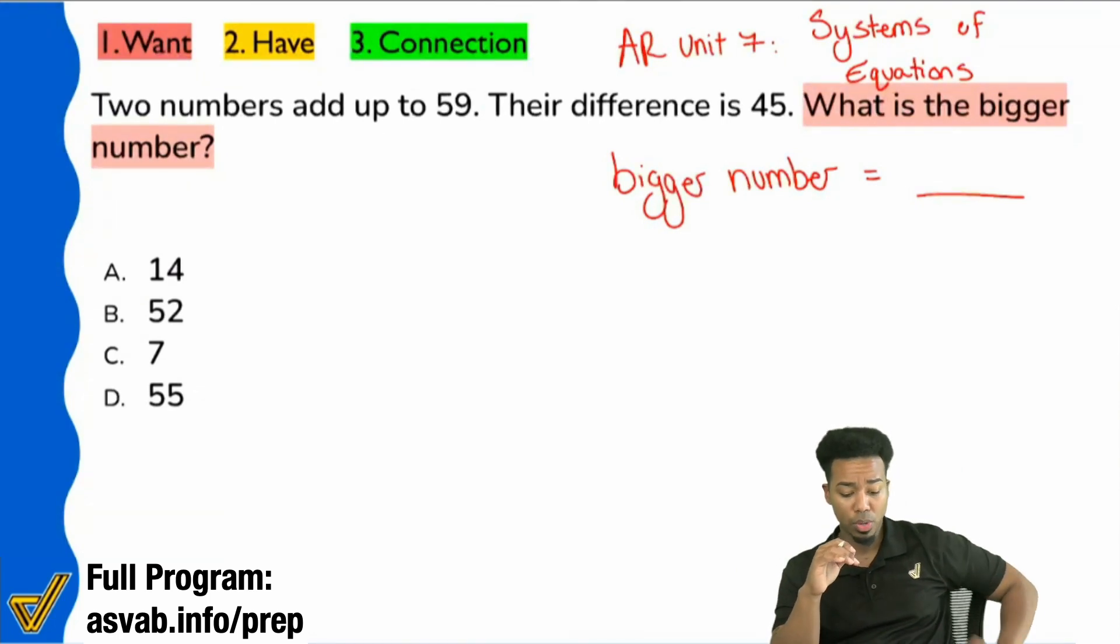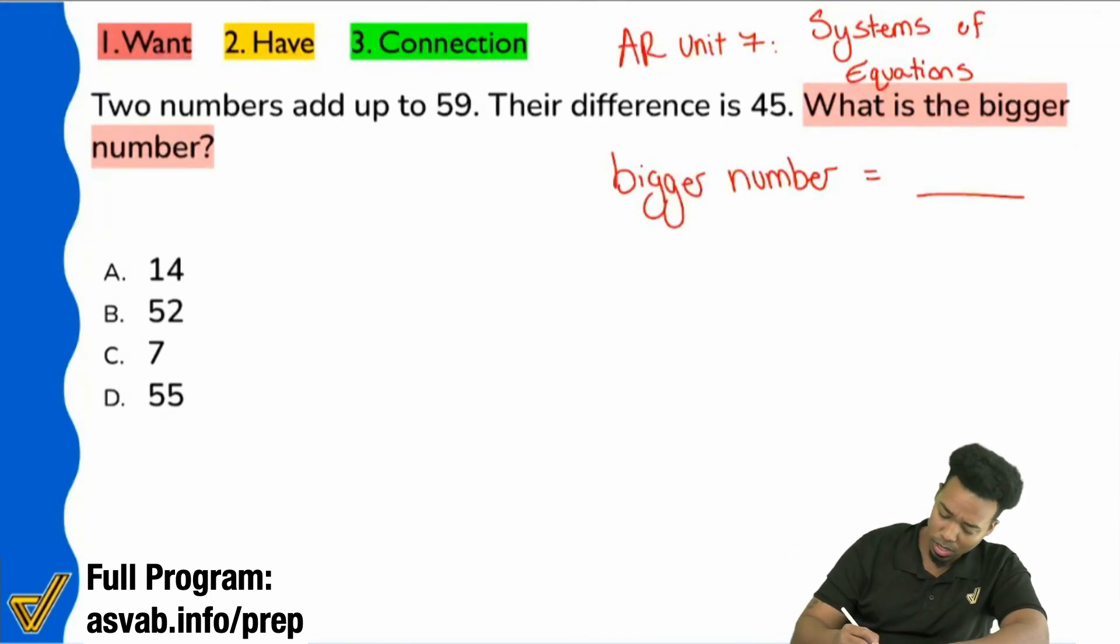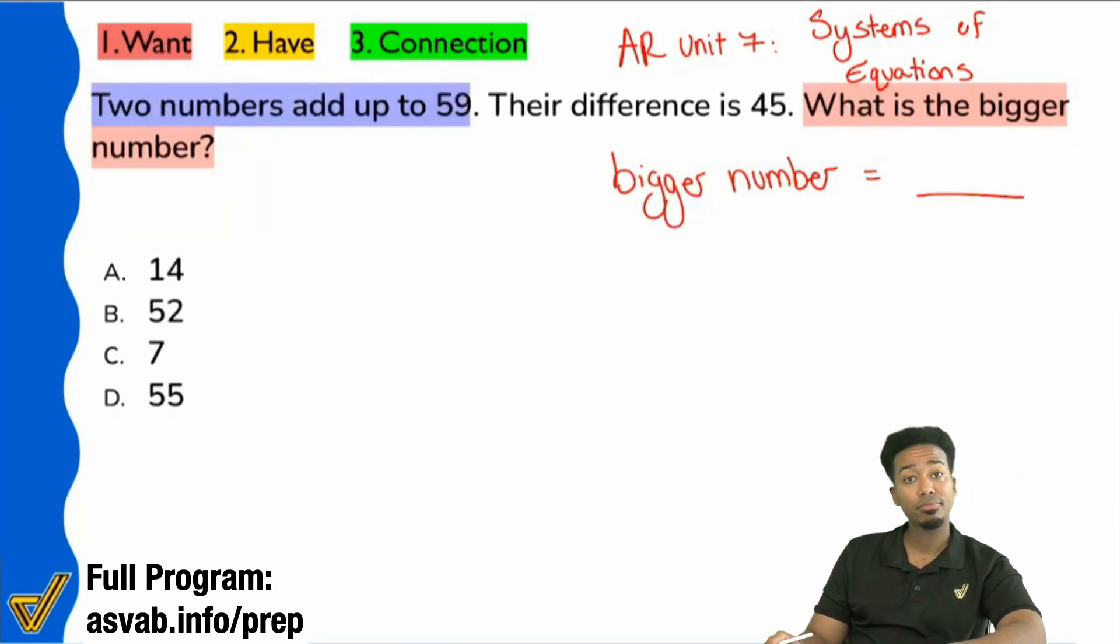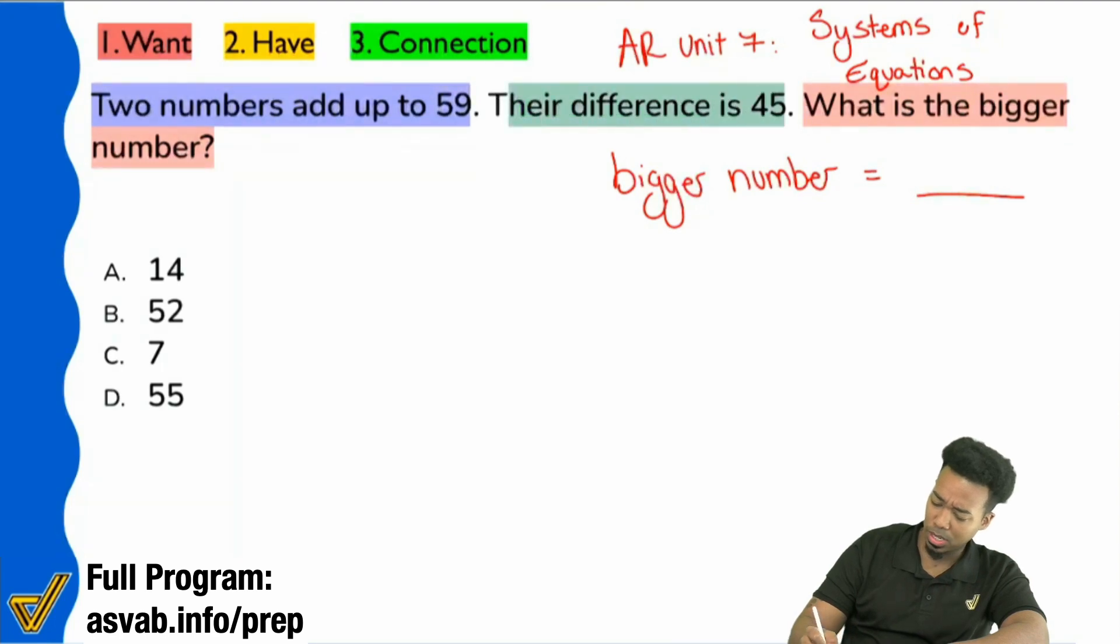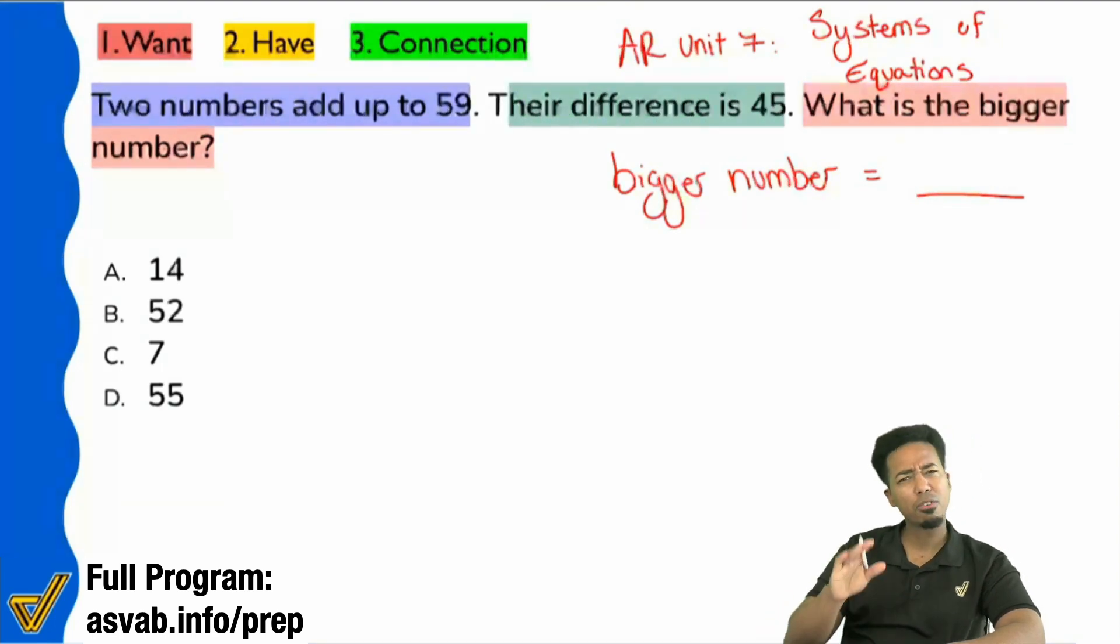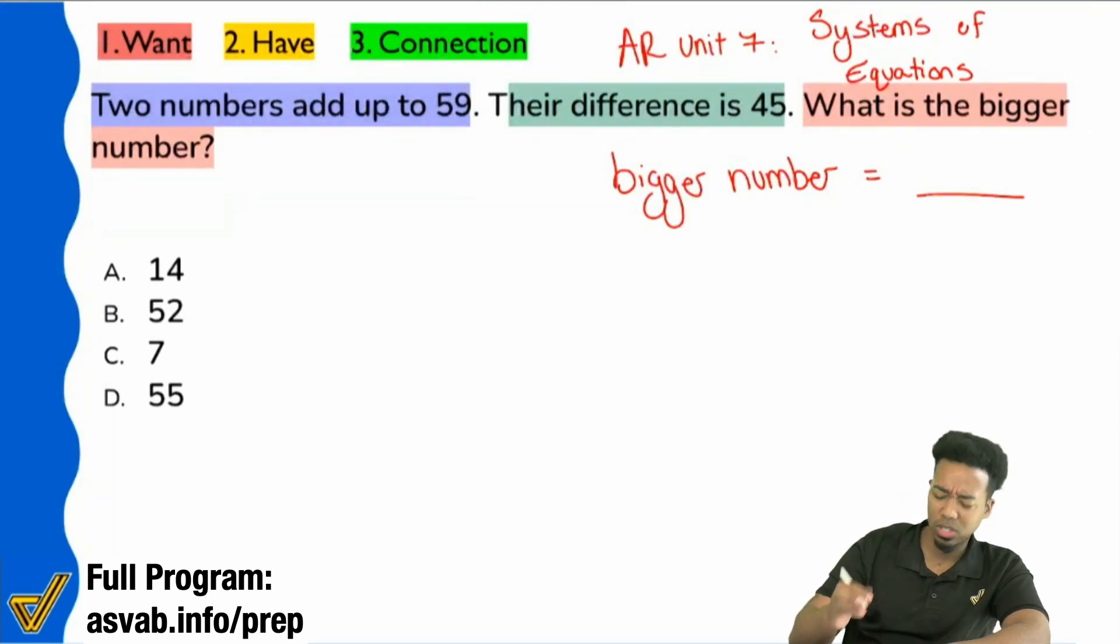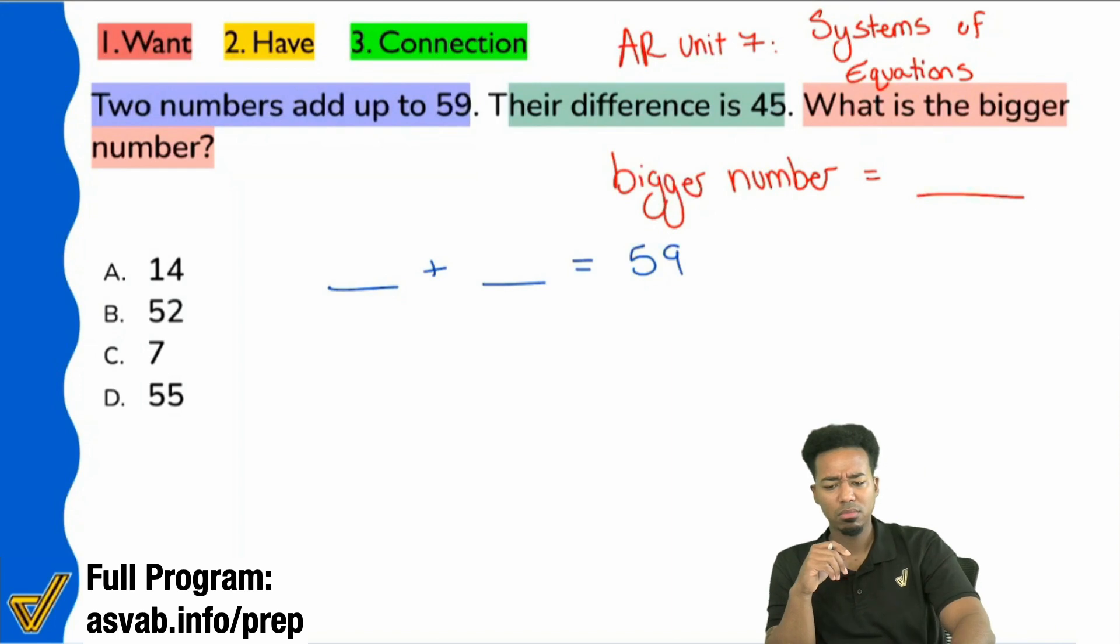Okay, the situation says two numbers add up to 59. And then it says their difference is 45. Now, that first part's pretty simple. It says two numbers add up to 59. So, everybody, is it true that that would mean that we have like some number plus another number equals 59? Is that true? Is that what that means? Two numbers add up to 59? Yeah, right? Thanks for agreeing with me there.